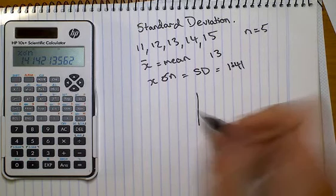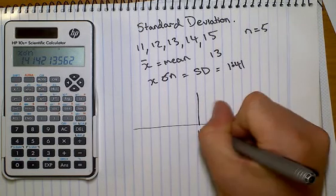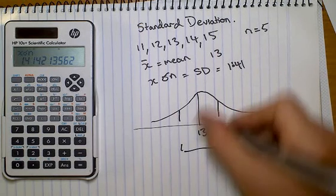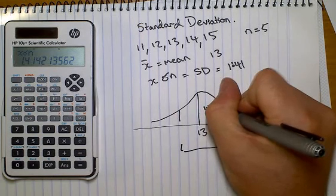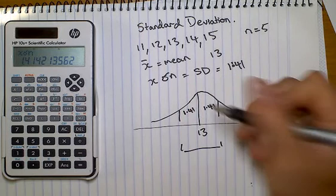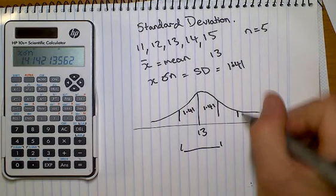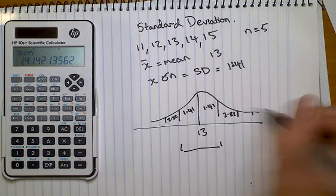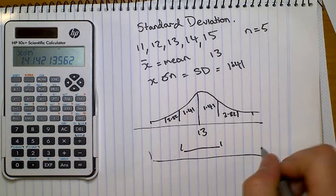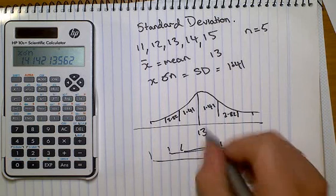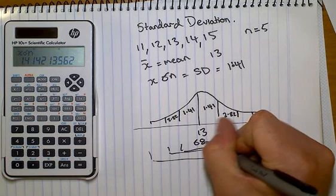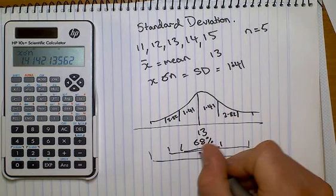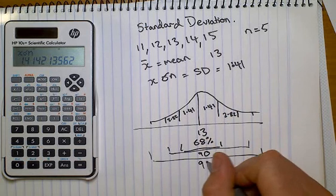This tells us about our data. If we were to graph this, the mean is 13 — put a bell curve. One standard deviation, which in this case is 1.41 of whatever we're measuring — kilograms, centimeters. Two standard deviations would be 2.82, and three standard deviations out is almost 100%. One standard deviation on either side covers approximately 68% of all the data, then 90%, and it continues outward.